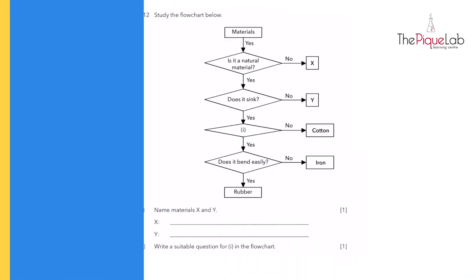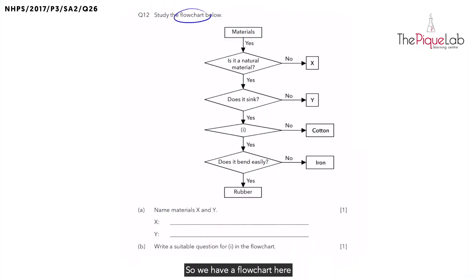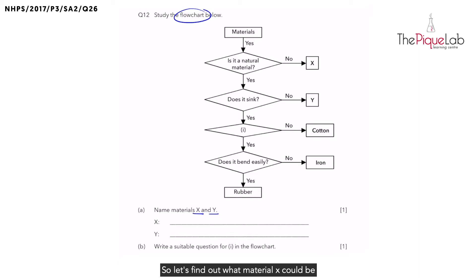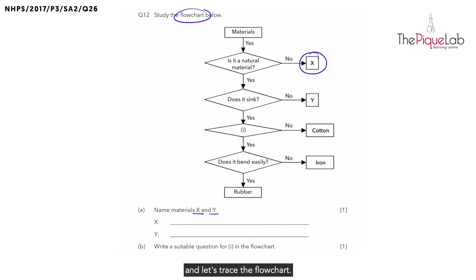So let's begin. We have a flowchart here and part A is asking us to name materials X and Y. So let's find out what material X could be by tracing our flowchart towards X. So it says, is it a natural material?